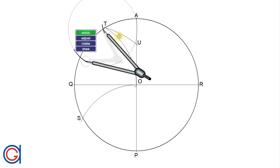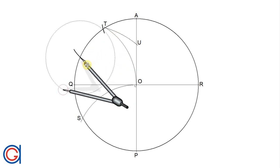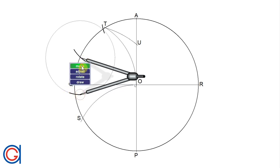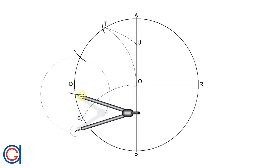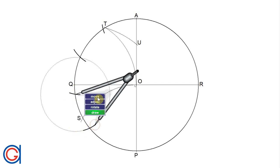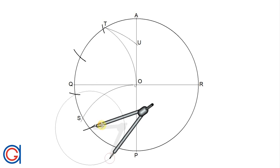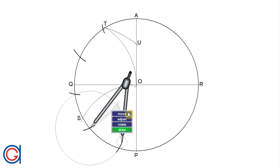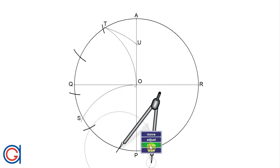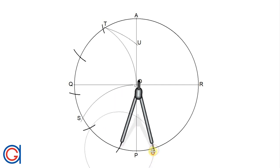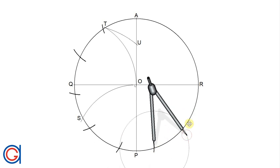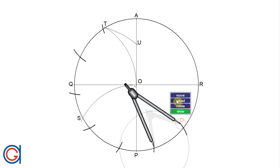We continue setting the compass on our previously described arc to get our next vertex. We have to be careful to be accurate and work with precision, centering the compass exactly on each arc to maintain accuracy. We continue this process marking our 11 vertices around the circumference, as can be seen here.